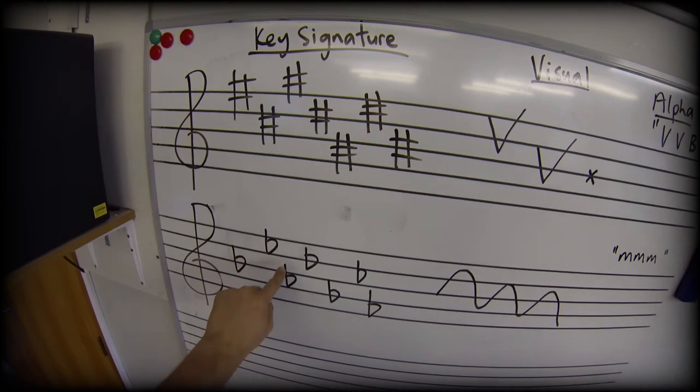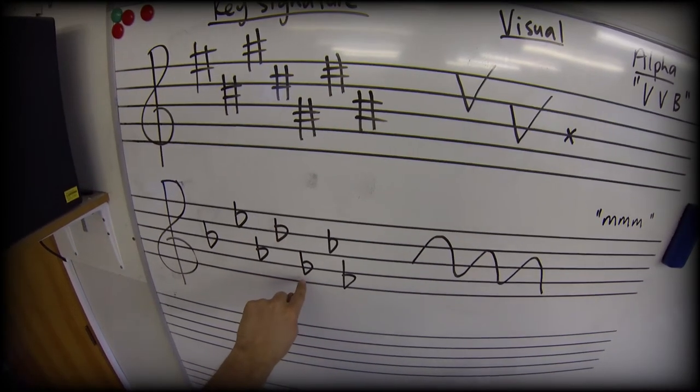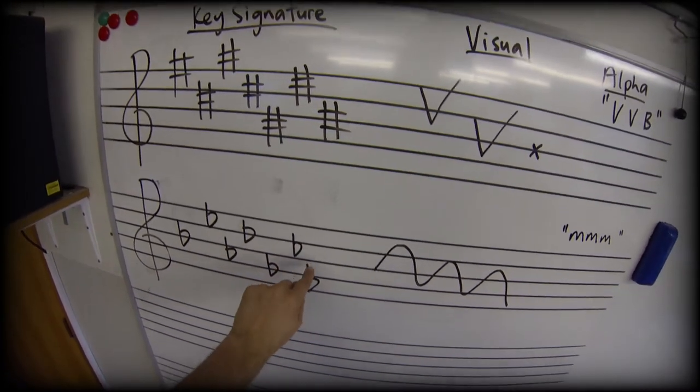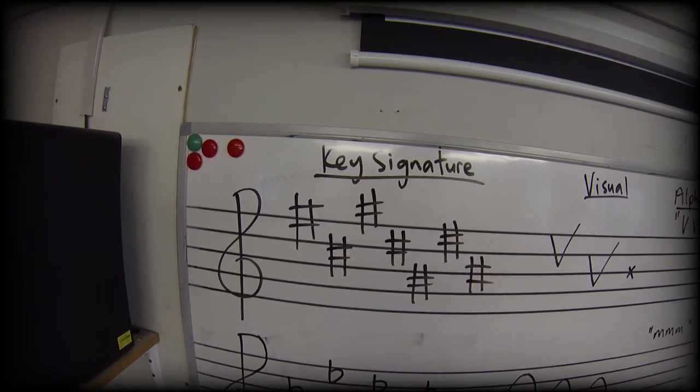B flat, up to E flat, mmm, a bit further down to A flat, up to D flat, a bit further down to G flat, up to C flat, a bit further down to F flat. So let's have a look at how it works with the sharps.